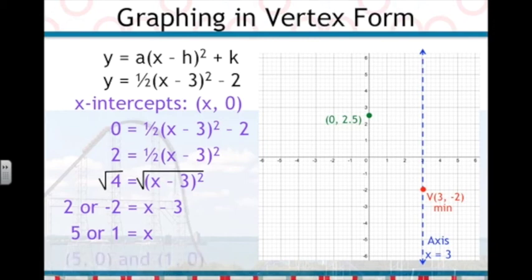Now we know that the two x-intercepts are 5, 0, and 1, 0. We'll plot these on the graph and label them with z's, because they show us the zeros. It doesn't matter which one you call z1 or z2, though.